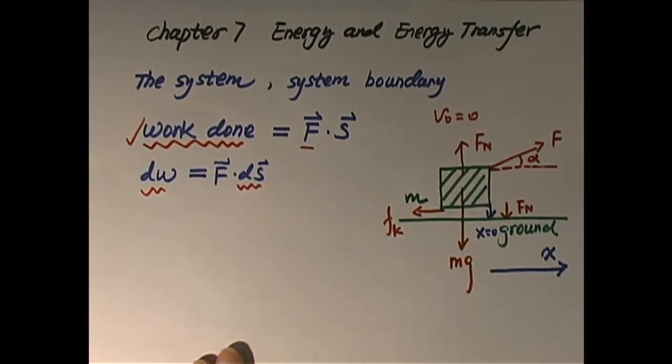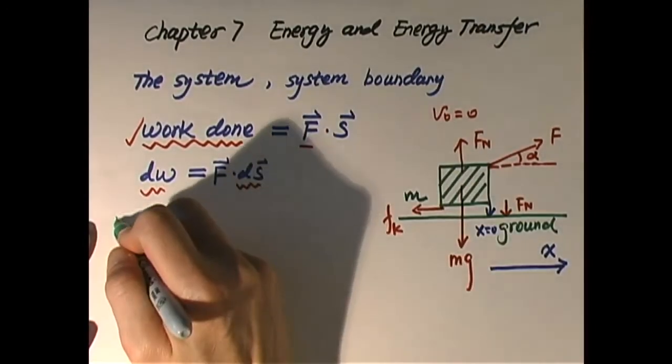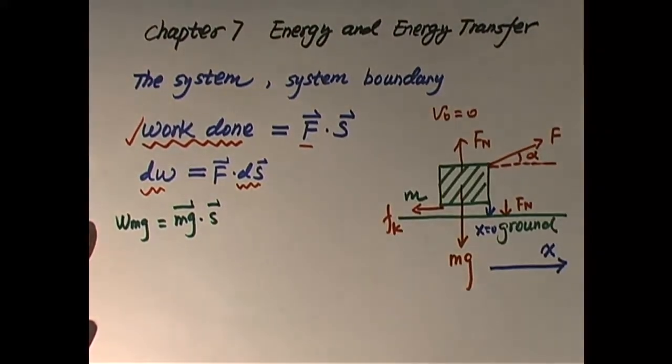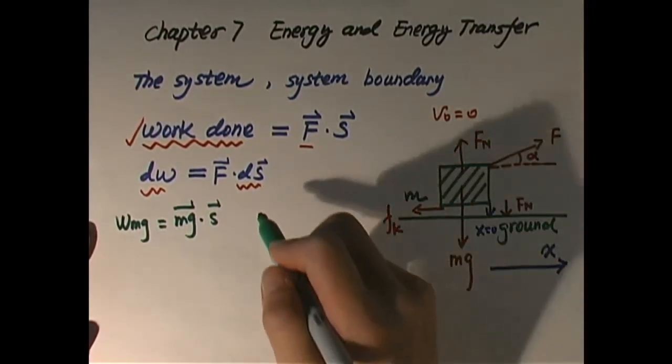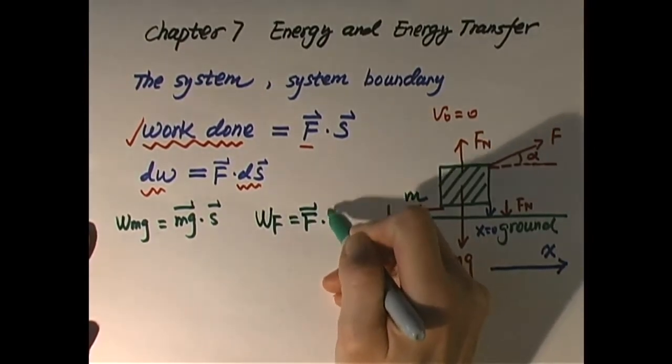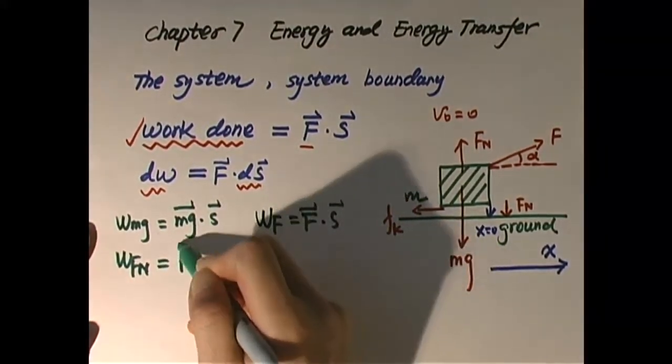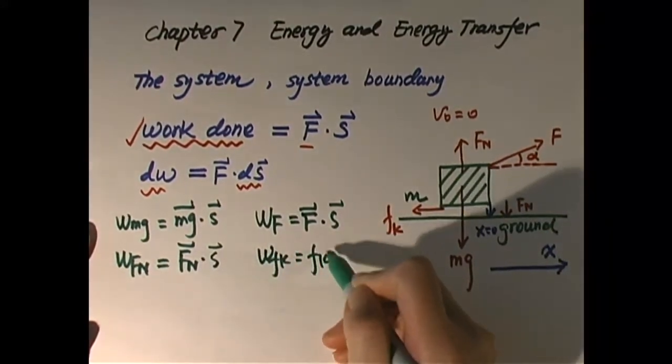Let's look at this case. This is the case where we have four constant forces. So we can ask: what is the work done by each constant force? When a force is constant, we can comfortably use this definition, F·s. So the work done by gravity equals the gravity dot the displacement. We can list all of these and do the calculation later. Work done by capital F equals capital F dot the displacement. Work done by normal force equals Fn dot displacement. Last one, work done by Fk equals Fk dot displacement.